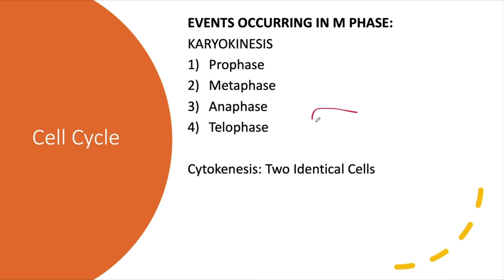The furrow comes in from both ends, and then in the second sub-phase — cytokinesis — we end up with two identical cells. Cytokinesis involves the formation of the cell plate, an equal division of the cytoplasm, one nucleus per cell, divided organelles, and two identical daughter cells. This is the end result after going through all these phases.